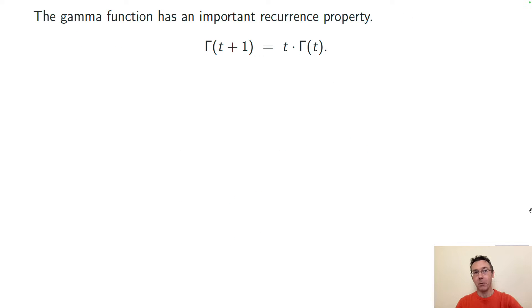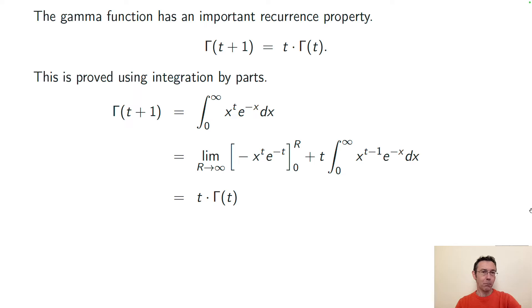Maybe the most important thing about the gamma function is this recurrence property. Gamma of t plus 1 is t times gamma of t. So if you know the value of gamma for some value, you know it for one more than that value. I'm going to flash the proof here for you. If you want to pause and go through it you can. It's integration by parts but I'm not going to go through it line by line.